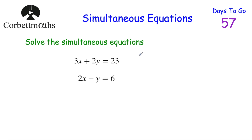I'm going to go through this question and show you how it's done, and then there's one for you to try. But if you feel comfortable with simultaneous equations, feel free to try this question yourself. So if I was asked to solve simultaneous equations like this, what I would look to do is try and cancel out one of the letters — one of the variables. We've got our x's and our y's.